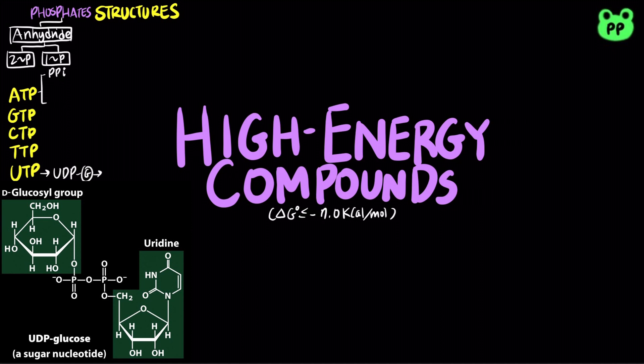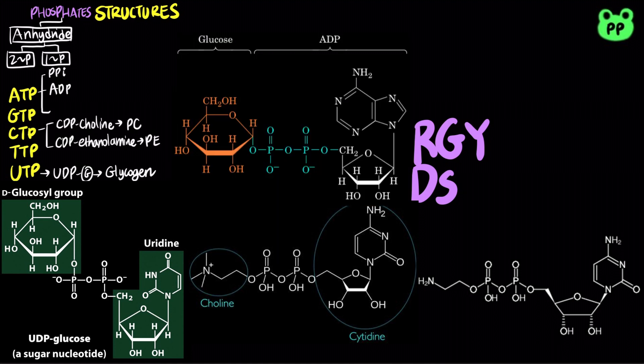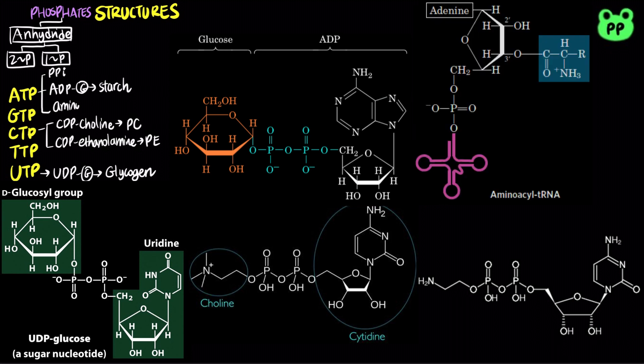UDP glucose derived from UTP is a precursor to glycogen synthesis. CDP choline derived from CTP is a precursor to the biosynthesis of phosphatidylcholine, which is a membrane phospholipid. CDP ethanolamine derived from CTP is a precursor to phosphatidylethanolamine, another membrane phospholipid. ADP glucose derived from ATP is a precursor to biosynthesis of starch, and aminoacyl tRNA derived from ATP is a precursor to protein synthesis.